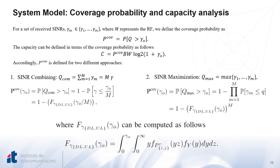Once we have derived the distribution of the SNR, we can easily define the coverage probability as the probability that the repeated signal SNR Q is greater than a given threshold. This threshold is the required SNR defined for a specific maximum coupling loss or coverage target. Moreover, the capacity can then be defined in terms of the coverage probability using the well-known Shannon formula.